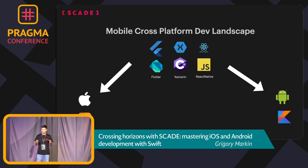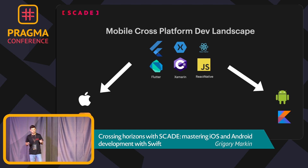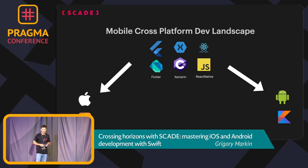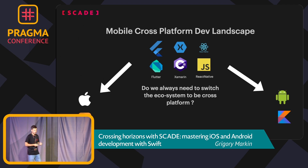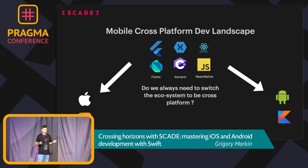Looking at the landscape of cross-platform development, we can notice basically two major platforms: Apple with Swift as the main language, and Android with Kotlin. But cross-platform frameworks use another ecosystem entirely. The three largest are Flutter from Google using Dart, Xamarin using C#, and React Native using JavaScript.